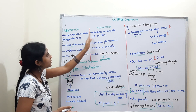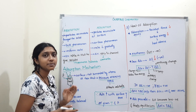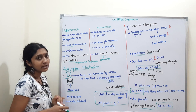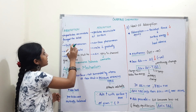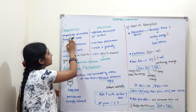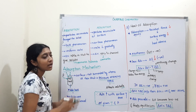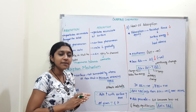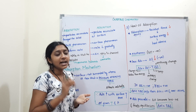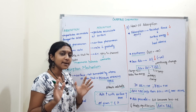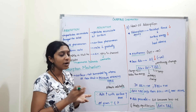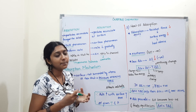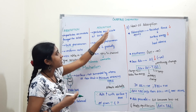First, we will talk about absorption. What is the difference between absorption and adsorption? There are 4 points. First, absorption is where particles accumulate throughout the solid. For example, when we absorb a sponge in water, the sponge fills with water throughout. That is absorption.